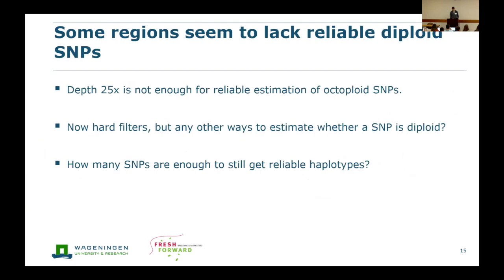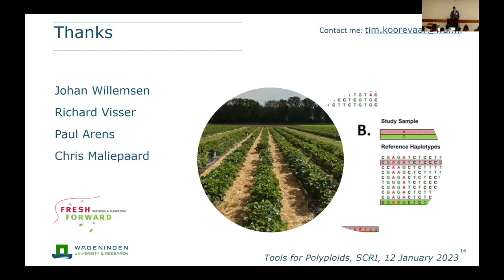In conclusion: a depth of 20 or 25× is probably not enough to have a reliable estimation of the octoploid SNPs. What's the best way to estimate whether a SNP is diploid-like and whether it's reliable? And how many SNPs are still good enough to get reliable haplotypes? With that, I want to thank you for your attention.